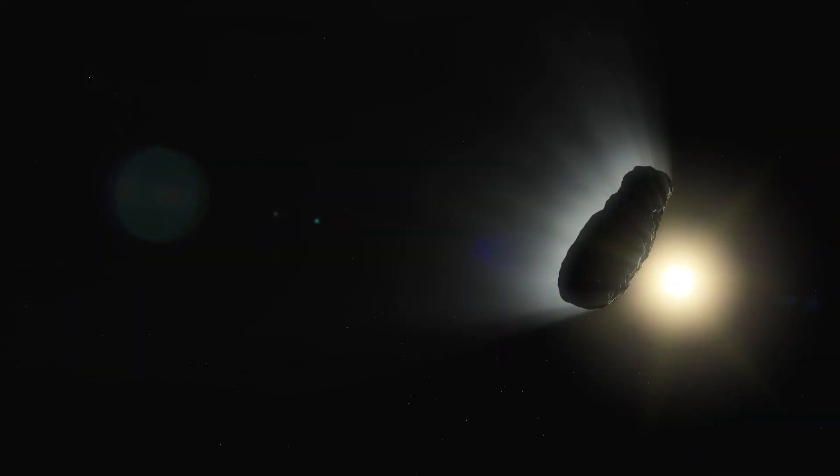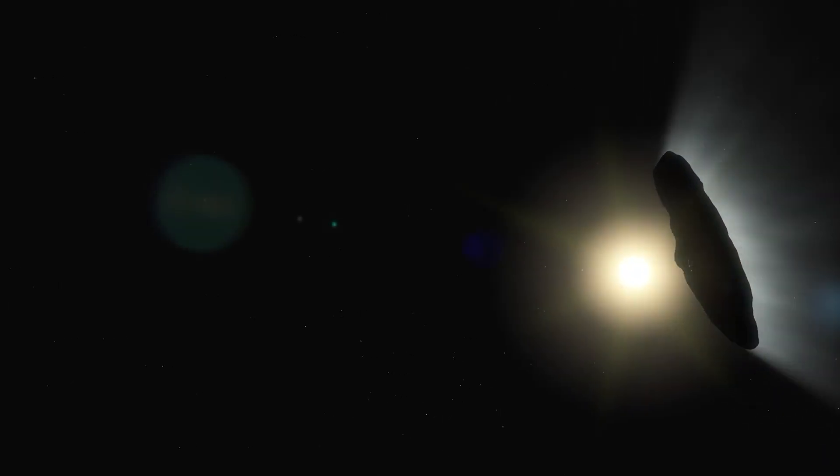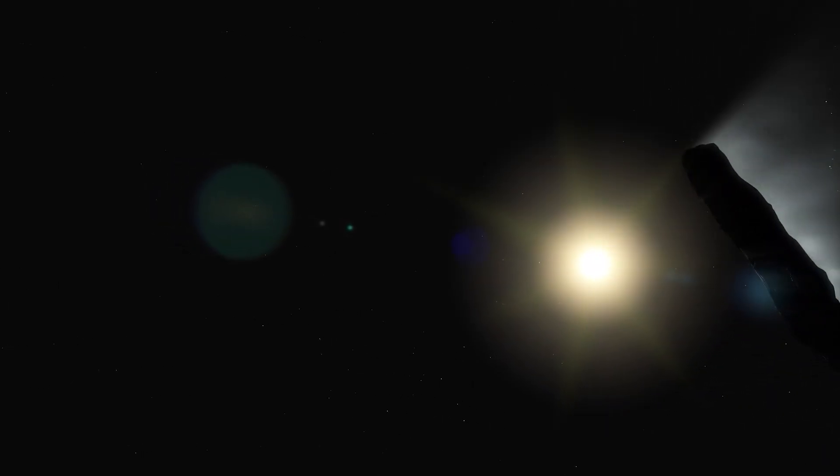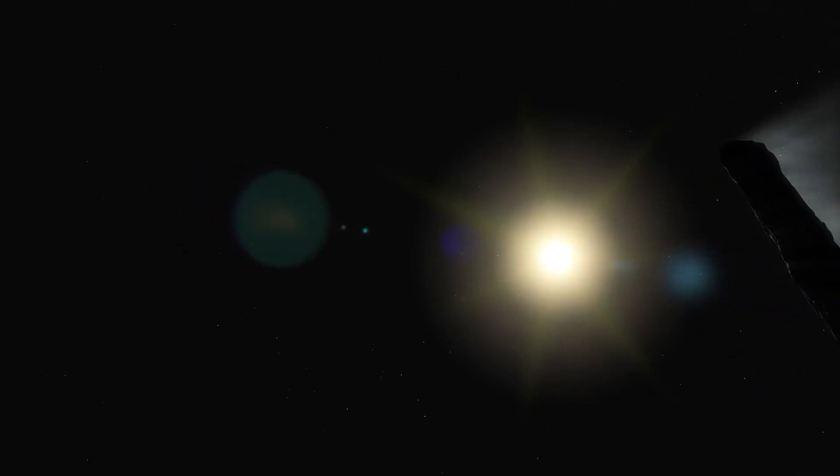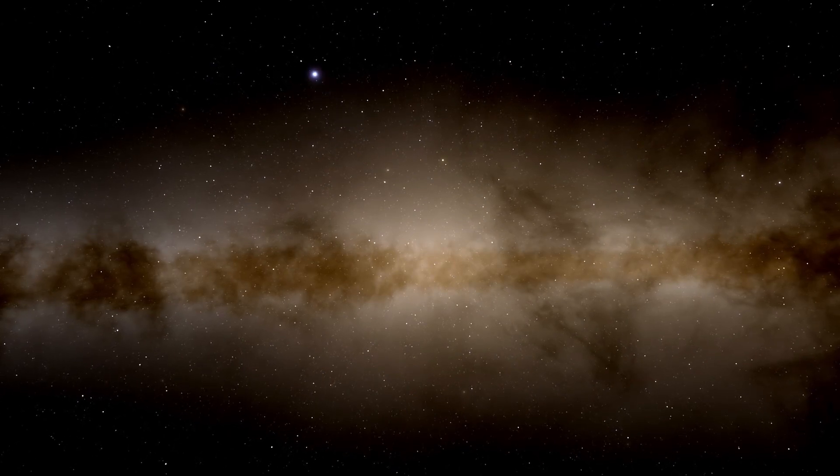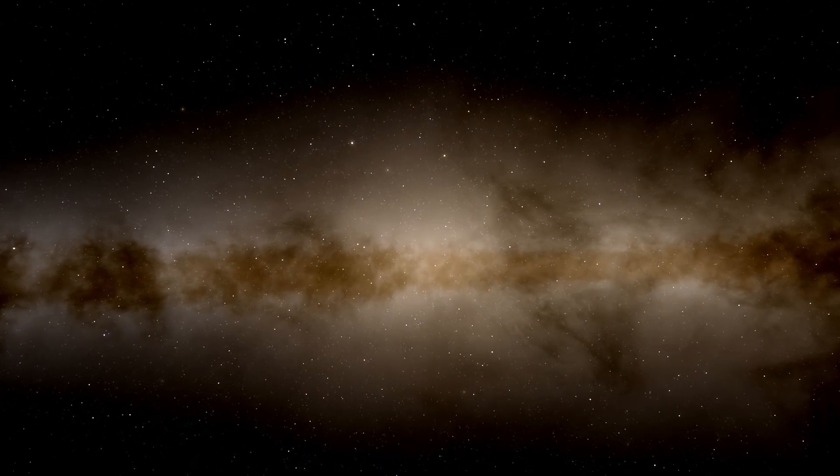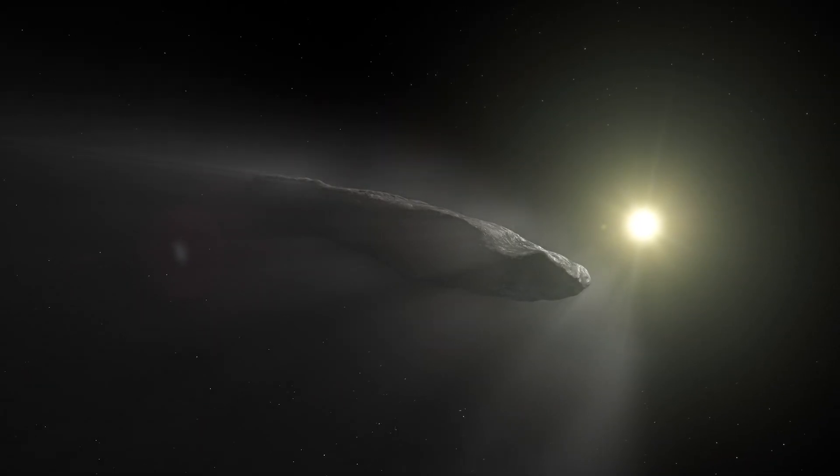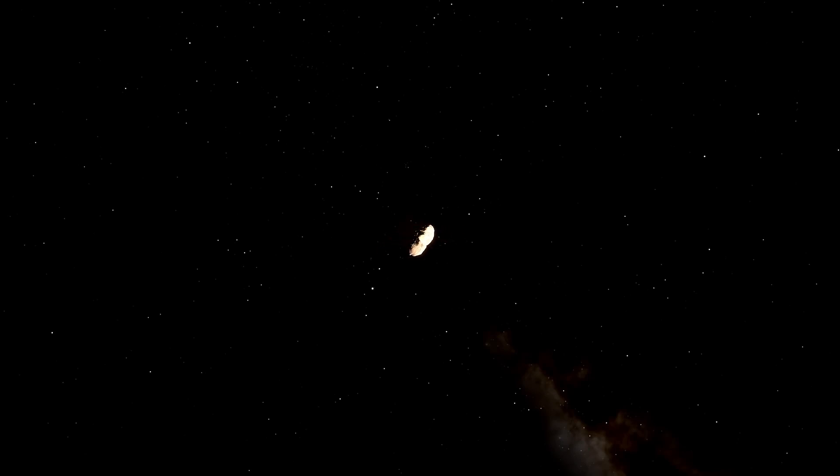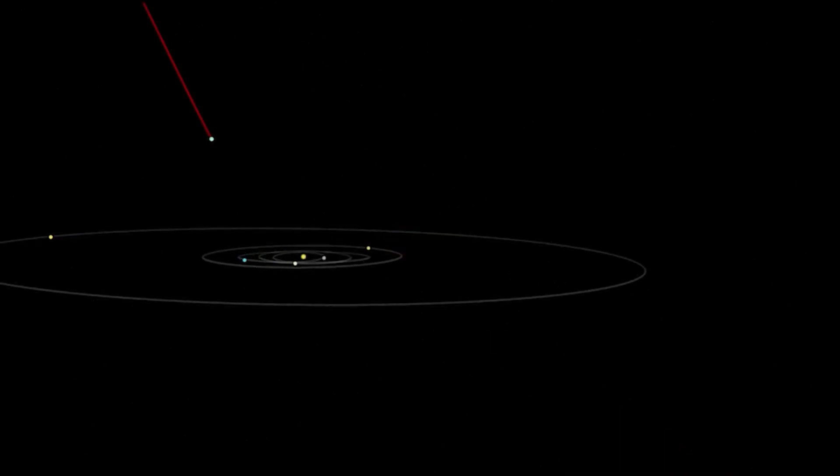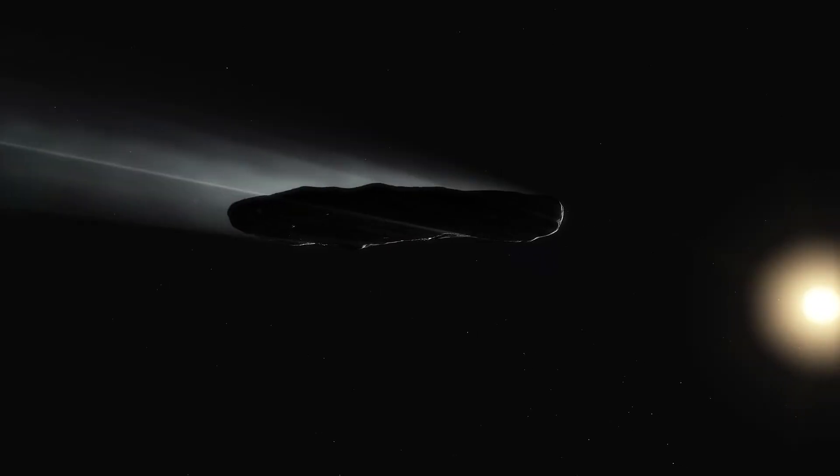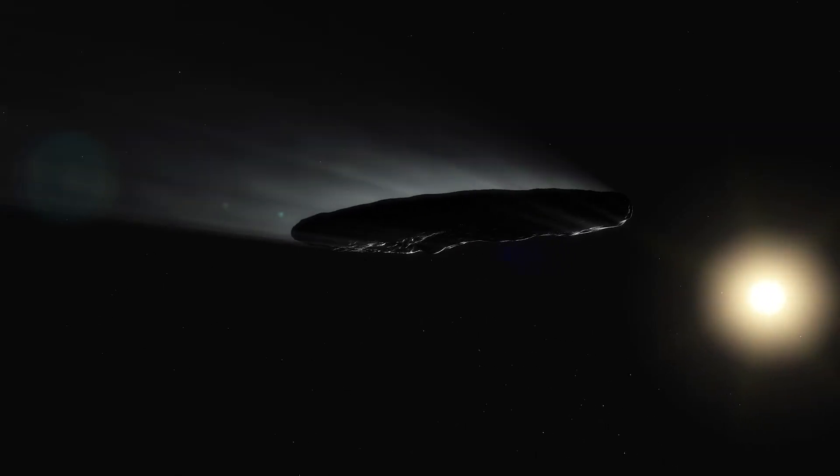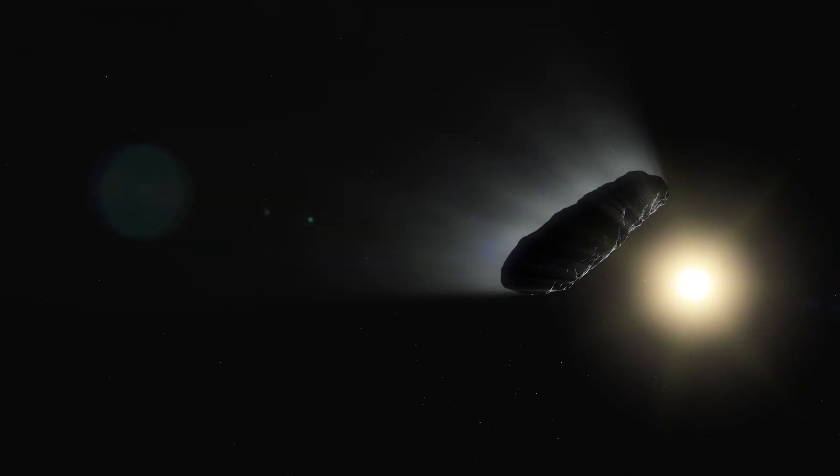NASA had only 11 days to observe this object, which moved at a speed three times faster than the Earth's orbit around the Sun. After that brief period, it was no longer detectable because it was too small and faint to be seen. This object entered our solar system and, after passing close to the Earth, abruptly accelerated out of our solar system in a different direction.